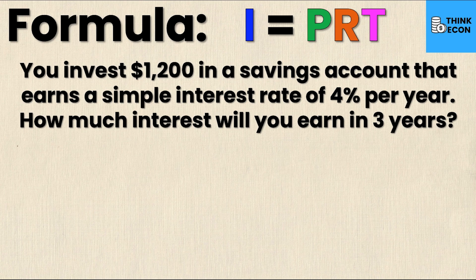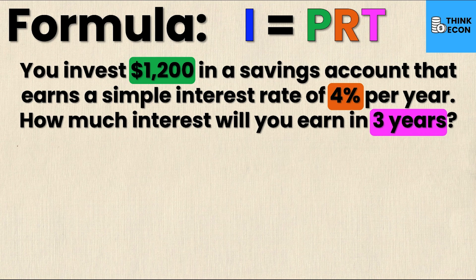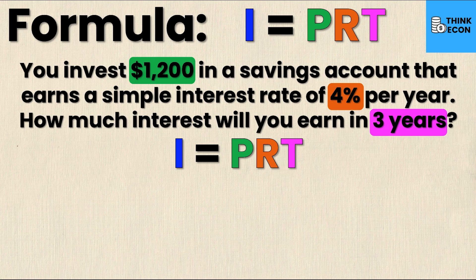First we need to know the principal — the starting amount — and we can see right here it's $1,200. Then we need to find our interest rate, which is 4%, and finally we need to know how much time has passed. In this case it's 4% per year and the time is three years. Now that I have all of this information I can substitute it in to calculate the interest, which is my unknown.